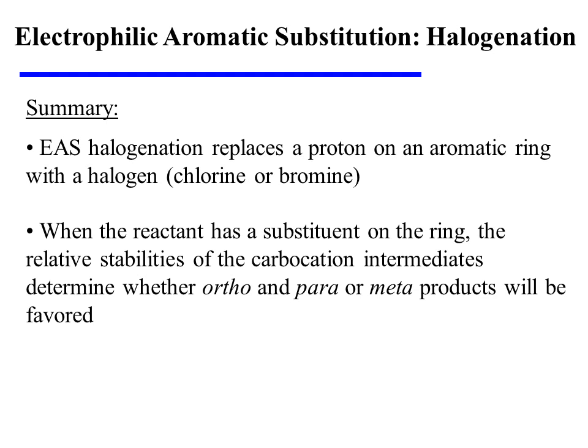In summary, EAS halogenation replaces a proton on an aromatic ring with a halogen — namely chlorine or bromine. When the reactant has a substituent on the ring, the relative stabilities of the carbocation intermediates, or sigma complexes, determine whether ortho and para or meta products will be favored.